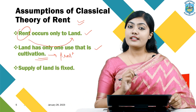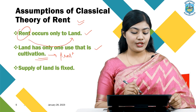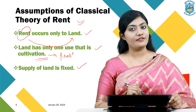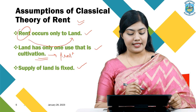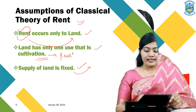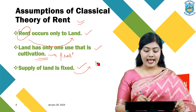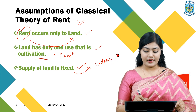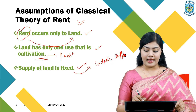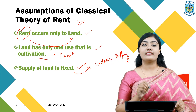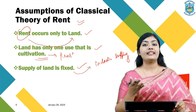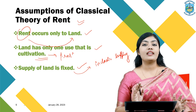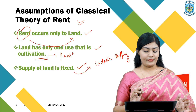The third assumption is that the supply of land is fixed, meaning there is an inelastic supply of land. By inelastic supply, we mean that even though rent is increased, the supply of land will remain fixed in nature.